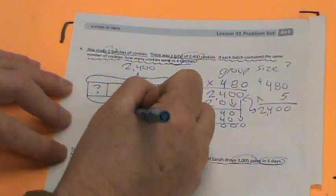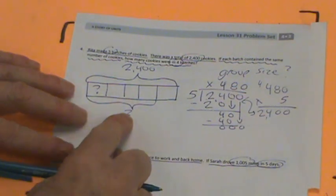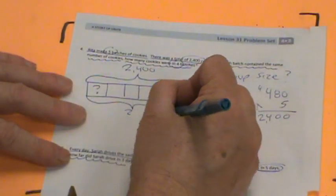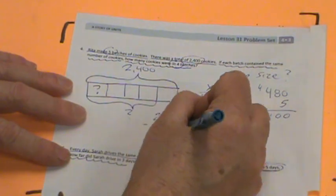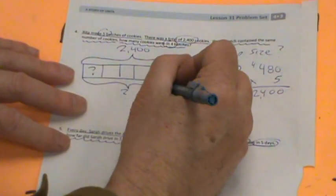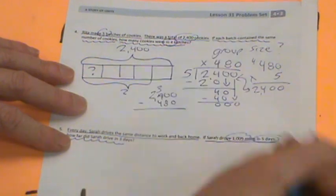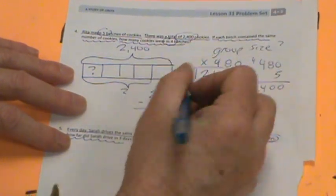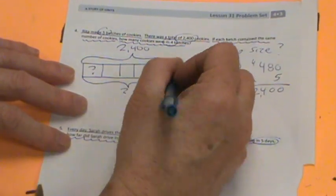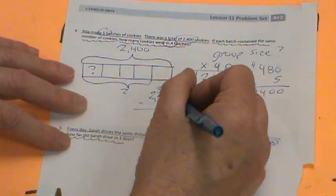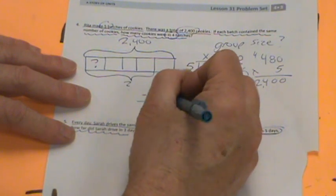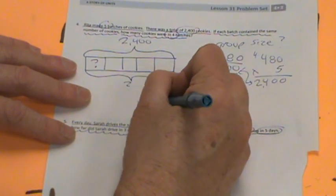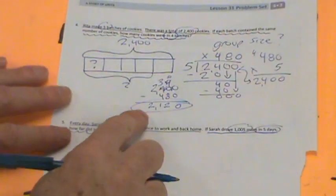So if each batch was 480, how would we figure out four batches? We would take 2,400 and minus 480. This is going to become a 10. This becomes a 9. 0 minus 0 is 0. 10 minus 8 is 2. 3 minus 4 is 1. So there's our actual answer. 1,920 are in four batches.